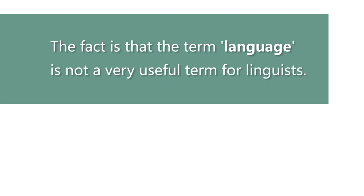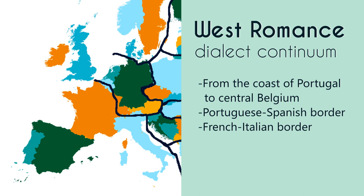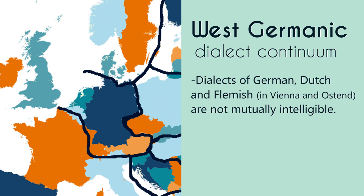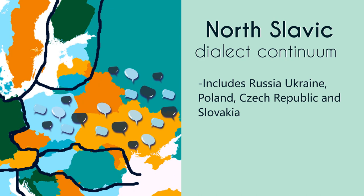The term 'dialect continuum' is more helpful than 'language' for describing this situation. The same phenomenon exists in the Scandinavian dialect continuum: varieties of Norwegian and Swedish spoken at the border are mutually intelligible very easily. The same is true for German, Dutch, and Flemish in the West Germanic dialect continuum. Likewise, across Russia, Ukraine, Poland, Czech Republic, and Slovakia, Slavic dialects are mutually intelligible — with no language name needed to draw a boundary.